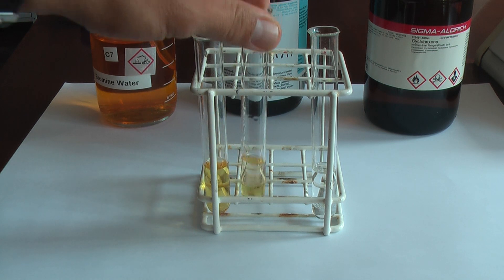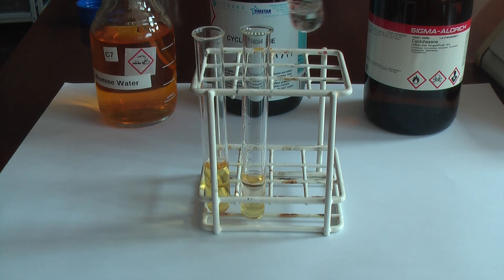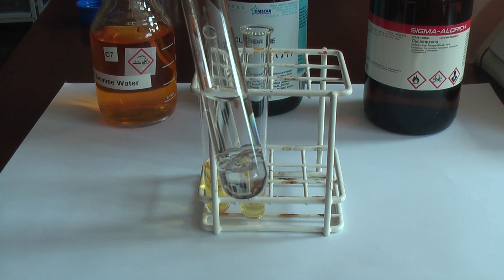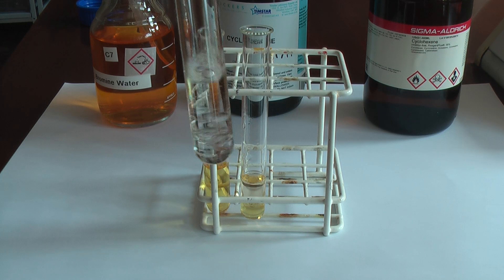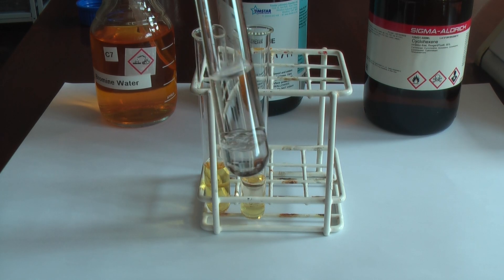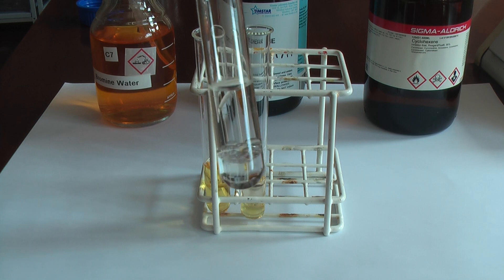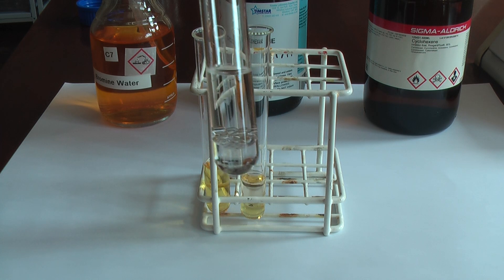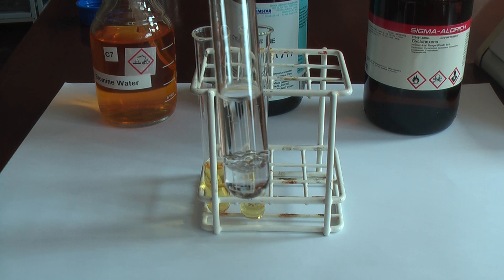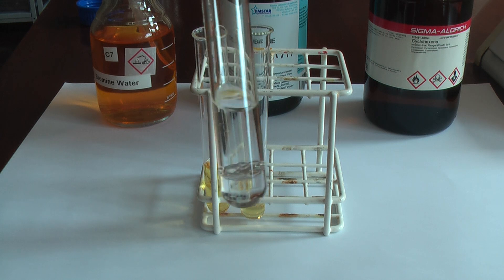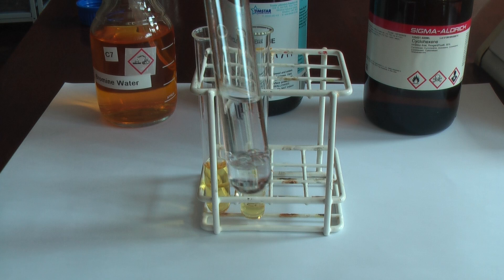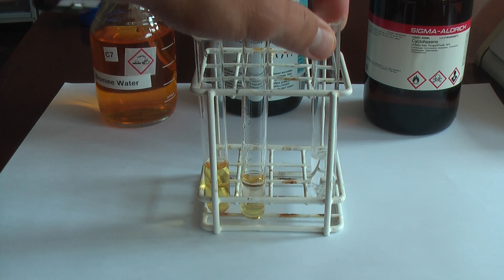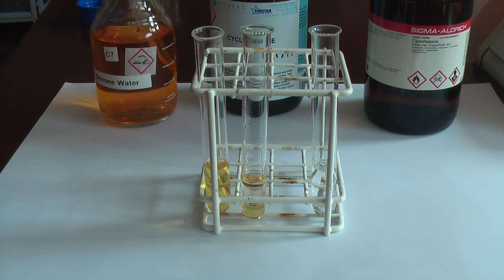With the cyclohexene, I've still got two layers; however, the bottom layer has now completely decolorized because it has reacted with the alkene, and it has now become saturated. Okay, just a very quick demo to show you. Thank you very much.